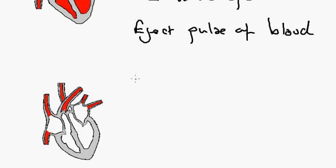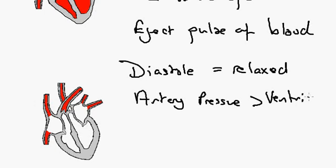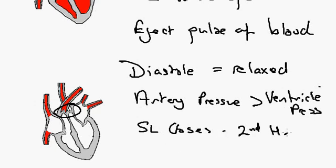And finally, in this diagram, the heart has returned to a state of diastole. It is relaxed, at which point the artery pressure is greater than the ventricle pressure, which means that the semilunar valves both close together. So let's put SL closes. And this actually causes the second heart sound.